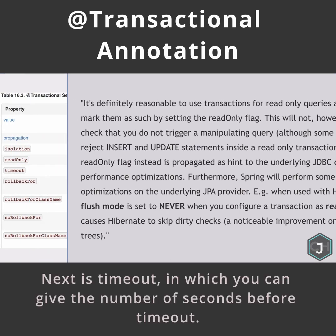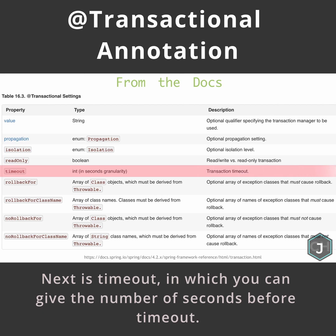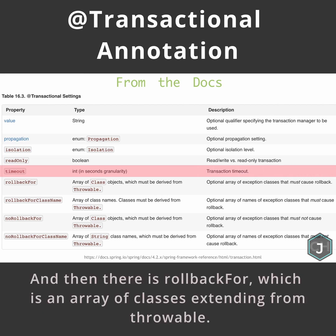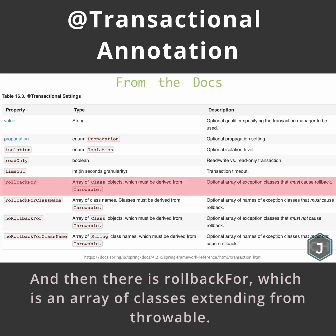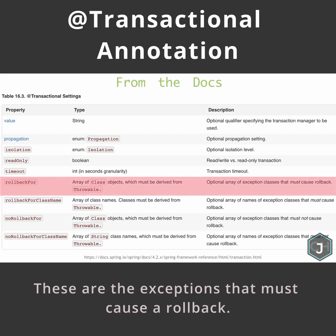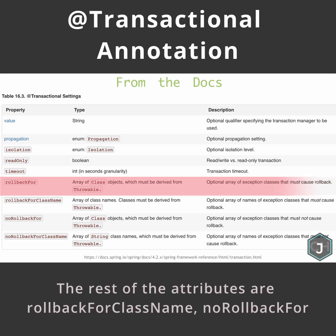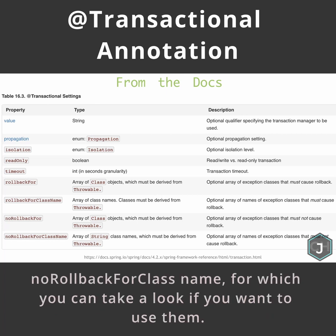Next is timeout, in which you can give the number of seconds before timeout. And then there is rollbackFor, which is an array of classes extending from Throwable. These are the exceptions that must cause a rollback. The rest of the attributes are rollbackForClassName, noRollbackFor, and noRollbackForClassName, for which you can take a look if you want to use them.